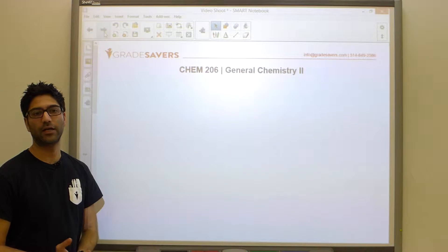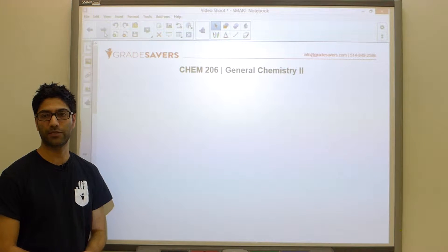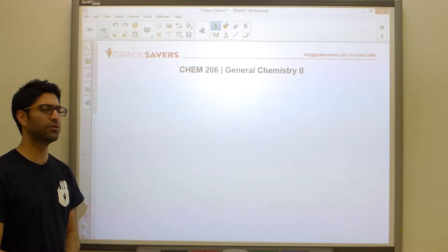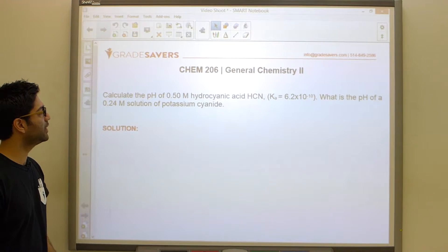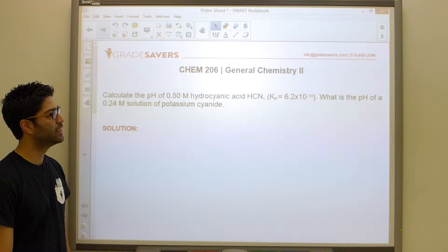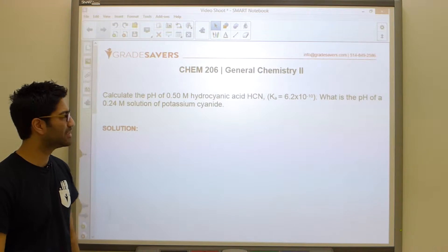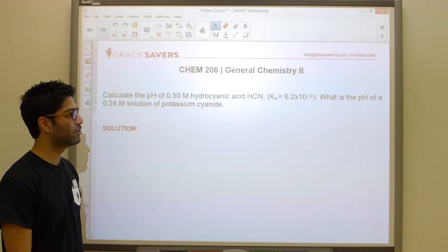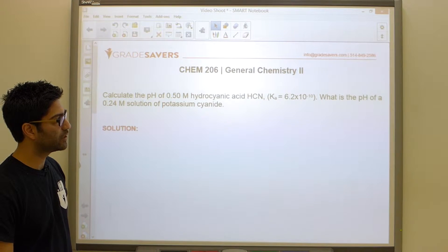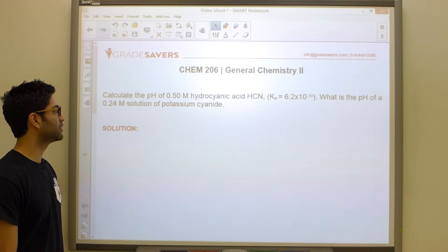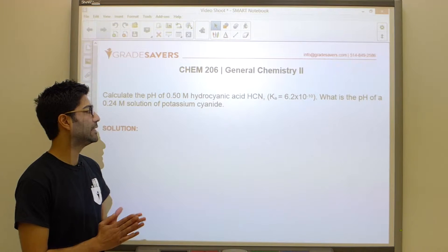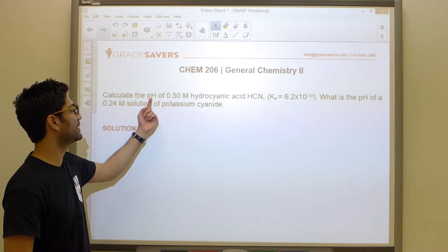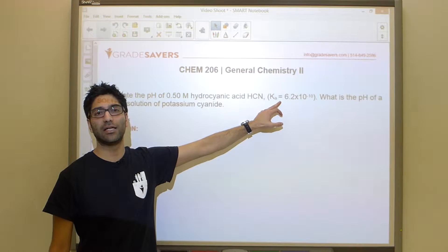Let's take a look at a basic acid-base problem. In these types of problems they ask us to calculate pH. The problem asks us to calculate the pH of a 0.50 molar hydrocyanic acid with an acid dissociation constant of 6.2 times 10 to the negative 10. This is about as typical as this type of problem gets. A second portion asks for the pH of a 0.24 molar solution of potassium cyanide.